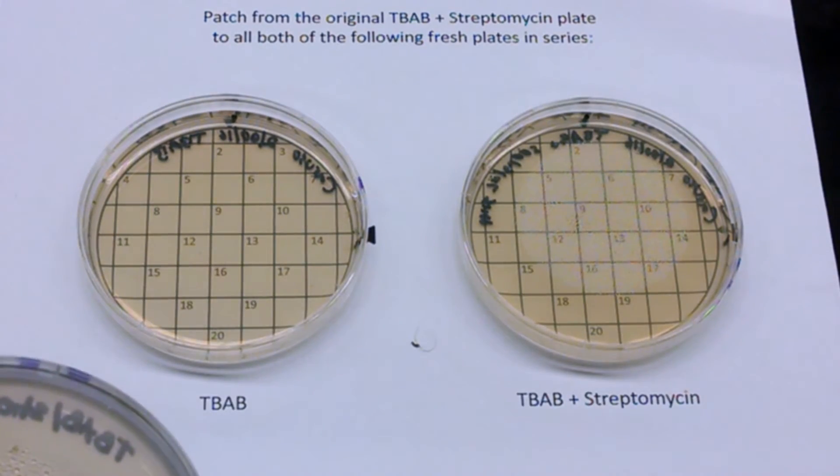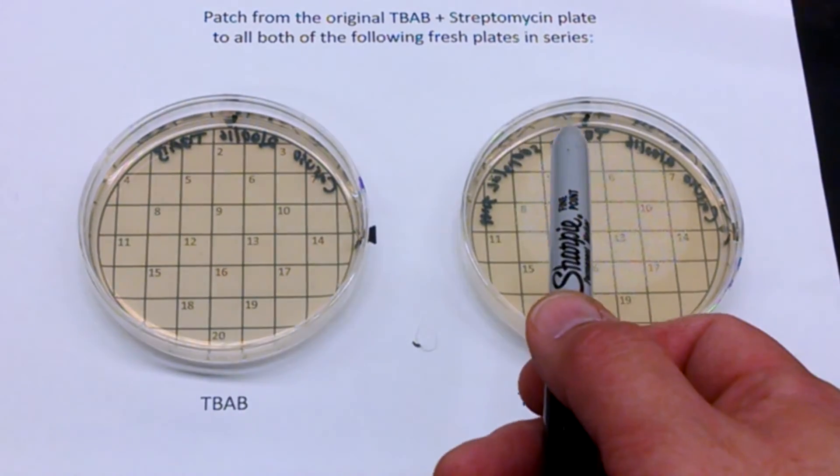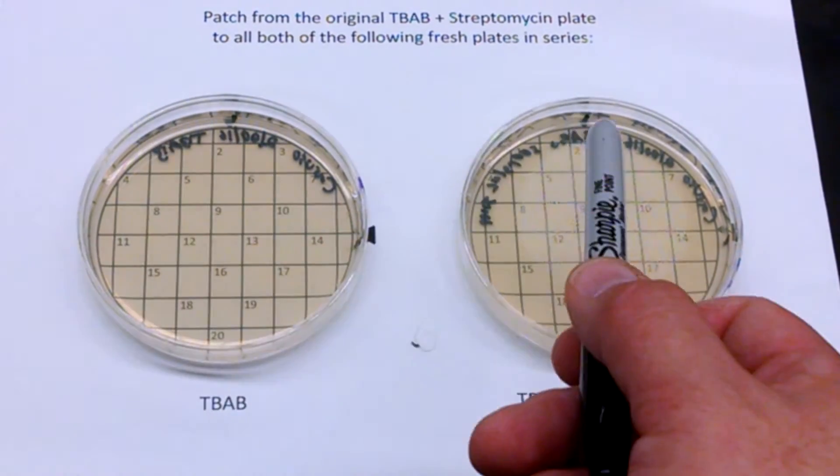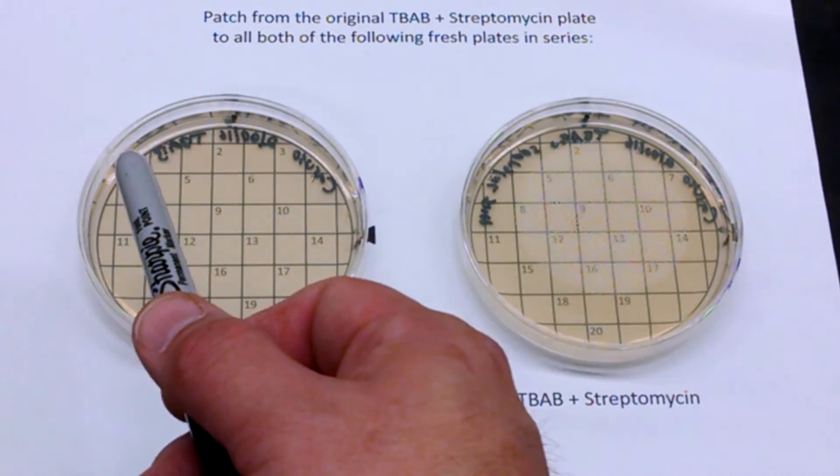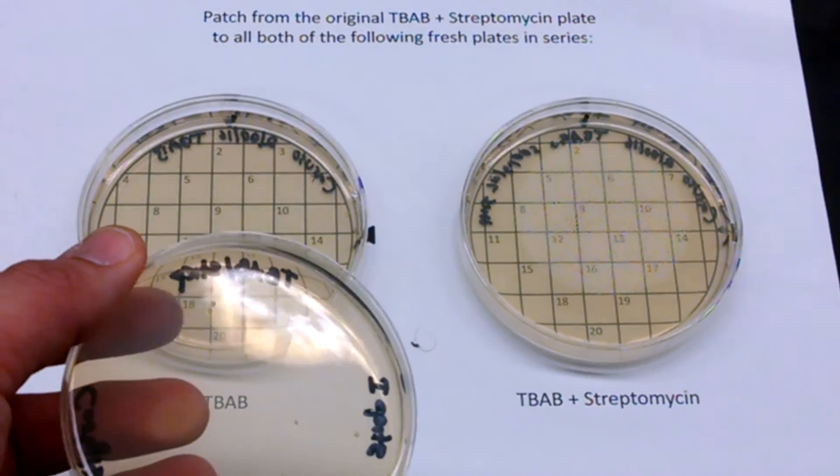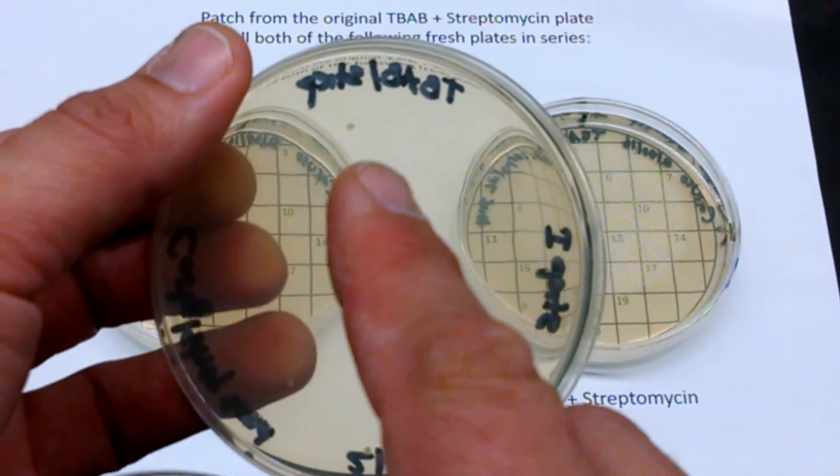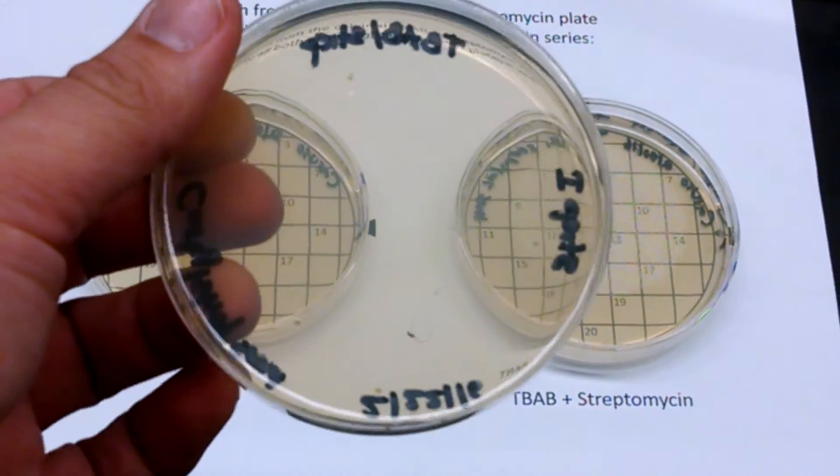And if you touch a colony, you're going to put it in the same box on both plates because you want to be able to find it again. You know that it grew, how well it grew on each plate, so it'll be in the same place. So for example, we're going to take this colony right here. It's a little hard to see, but there's one right there. So we'll start with that one.